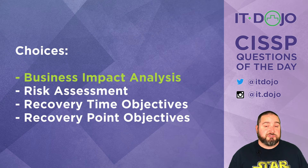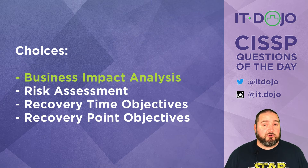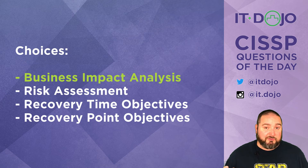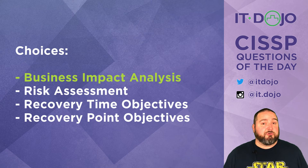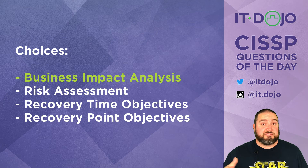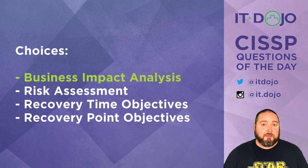In step two you identify resource requirements, and in step three you identify recovery priorities for the resources in your organization. Choice two is risk assessment — no, maximum tolerable downtime is not directly associated with risk assessment; it's more likely associated with a BIA. The last two options, recovery time objectives and recovery point objectives — RTOs and RPOs — are both discussed in the same vein as maximum tolerable downtime, and they are all part of a business impact analysis.